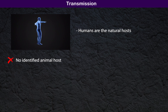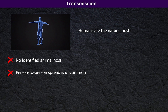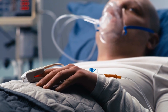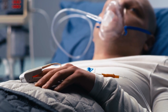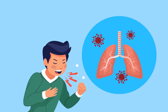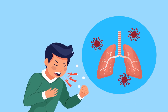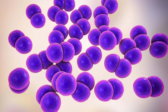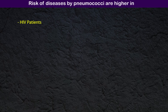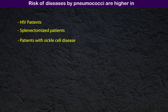Transmission and clinical features: Humans are the natural hosts for S. pneumoniae; there is no identified animal host. Person-to-person spread is also uncommon. Pneumonia is a result of aspiration of pneumococci-containing upper airway secretions into the lower respiratory areas. The risk of disease by pneumococci is high in HIV patients, splenectomized patients, and patients with sickle cell disease.